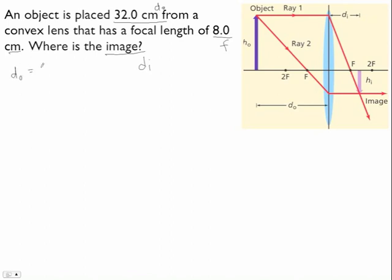We have do equals 32 centimeters. We have our focal length equals 8 centimeters. And we want our image distance.